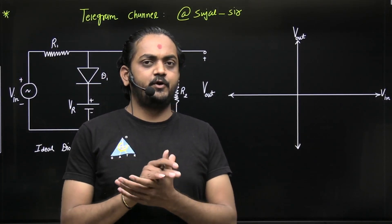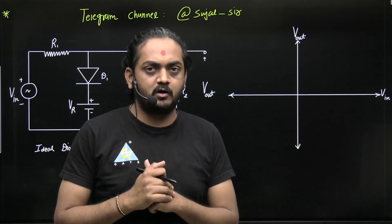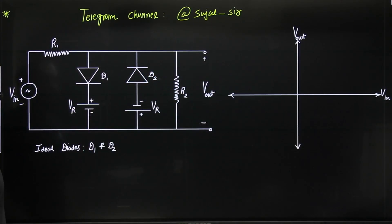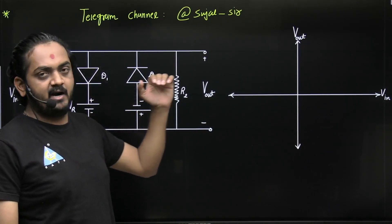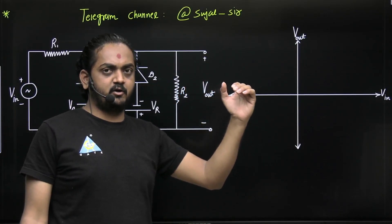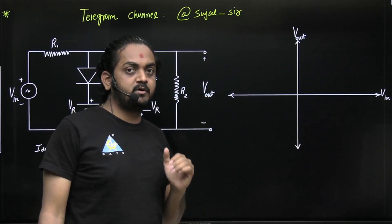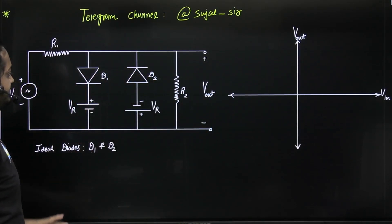Hello dear students, in this video I will provide you an important shortcut for the two-level clipper circuit. This circuit clips a certain portion of the positive cycle of the input signal and a certain portion of the negative cycle of the input signal. This is the standard configuration.